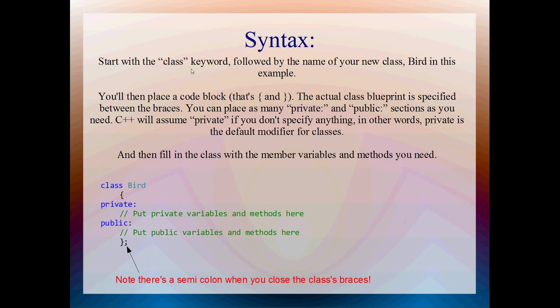So, the syntax. You start out with the class keyword followed by the name of your new class, bird. In this example, my new class is called bird. You then place a code block. That's curly brackets. And the actual class blueprint is specified between the curly brackets. You can place as many private and public sections as you like. And C++ assumes private if you don't put anything. Yeah, and then you fill in the class with member variables and methods you need. So this is actually one of the only differences between structures and classes, is that classes are private by default and structures are public. Anyway, we're not talking about structures, so let's just move on, shall we?